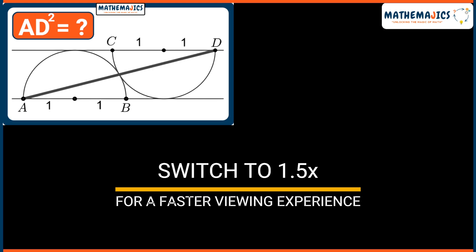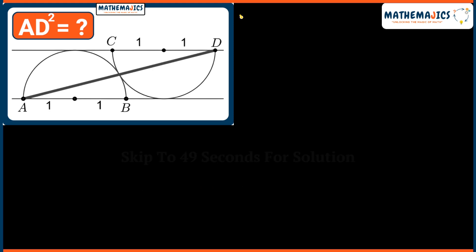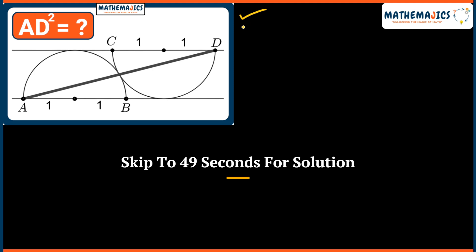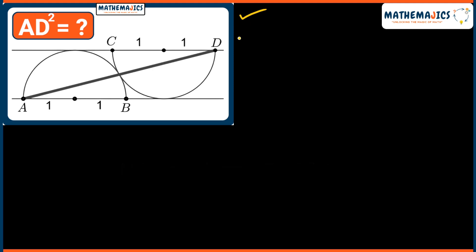Hello everyone. We have this very interesting question from an exam called the Kangaroo exam, and you can also find this in math olympiads. What is given to us is that there are two semicircles of equal radius and they are touching each other tangentially. We need to find the length of AD squared.